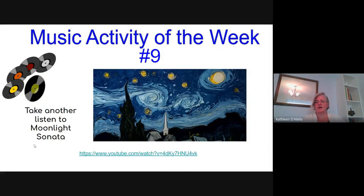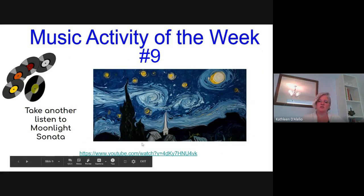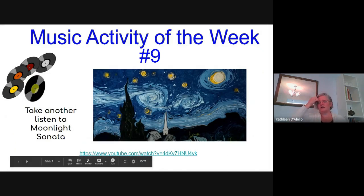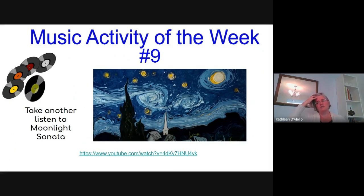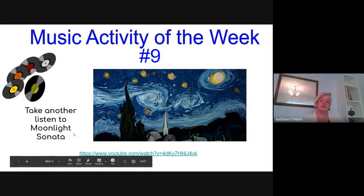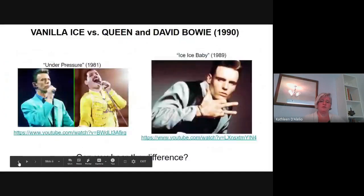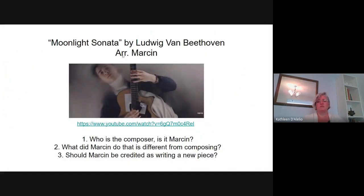I encourage you to join us next week for that discussion. For music activity of the week number nine, take one more listen to Moonlight Sonata — this is that famous video. The artist Garrett A does a painting on dark water and sets it to Moonlight Sonata. This video is short because there was a lot of class discussion this week about the role of the composer versus the arranger. The arranger is what we would say Marcin did — he arranged the music for guitar from piano. One student came up with the word 'translated,' and I thought that was a great description: to translate music from one instrument to another.